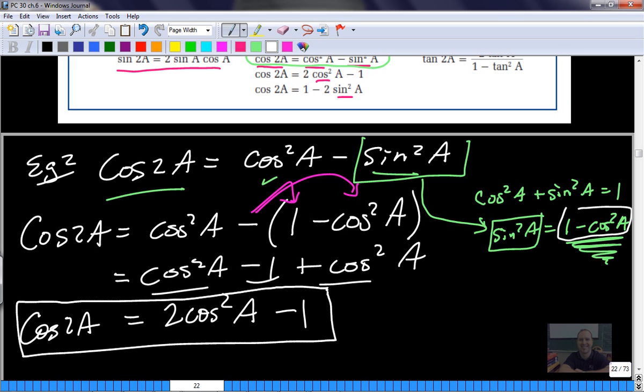So that's a way I can rewrite one of the identities using another identity. And that's what this whole chapter is about.